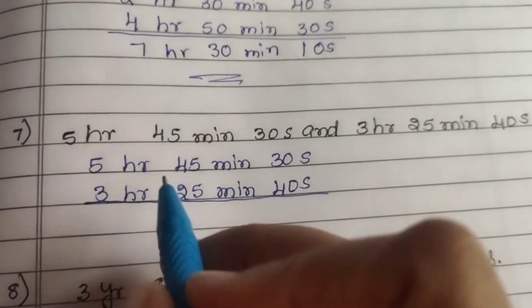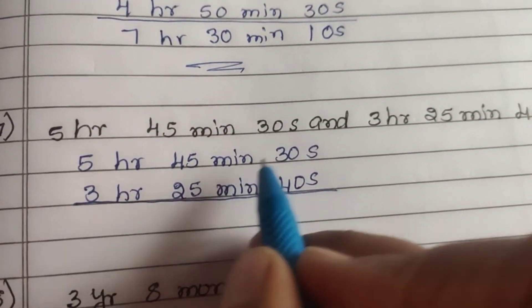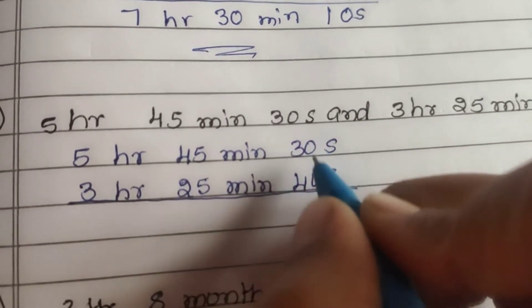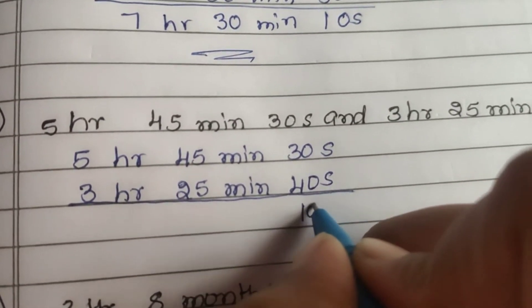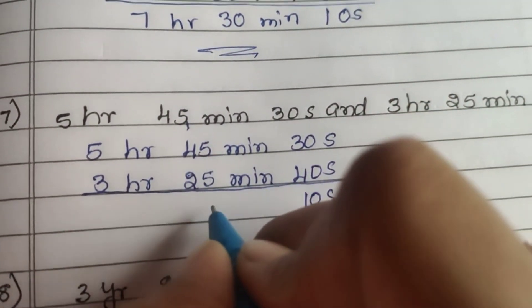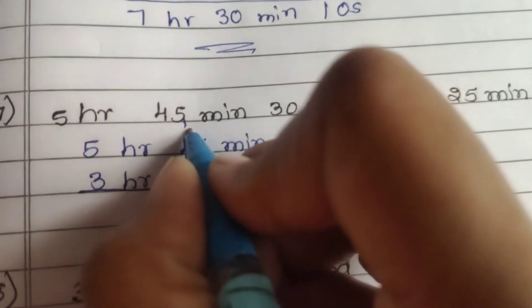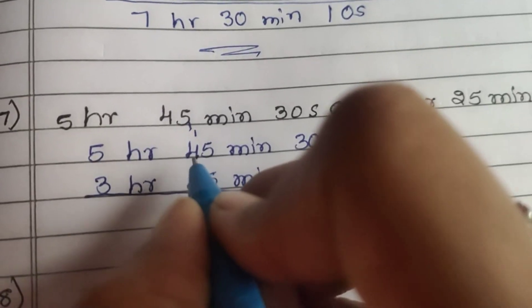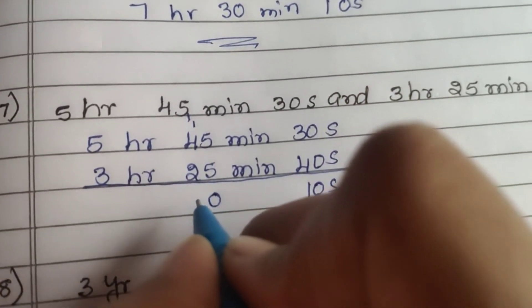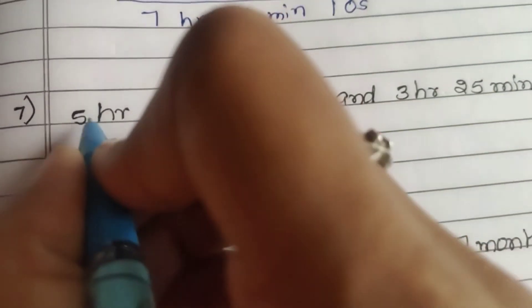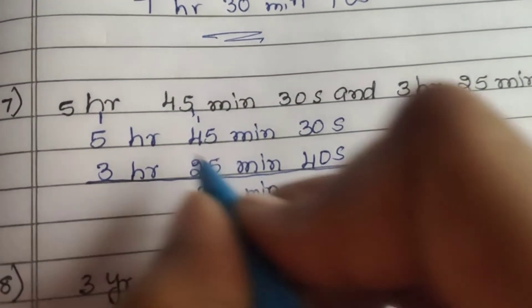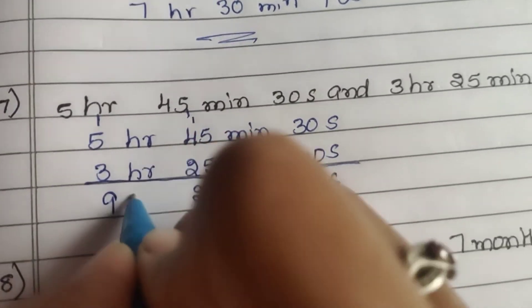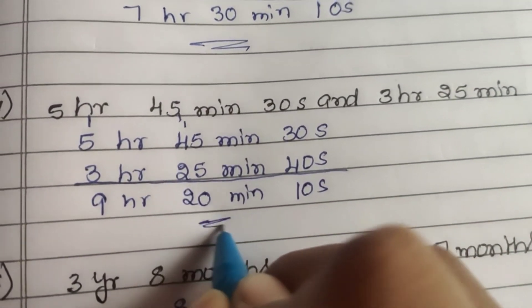7th question: 5 hours 45 minutes 30 seconds and 3 hours 25 minutes 40 seconds. 30 plus 40 is 70 — write 10, carry 1. 5 plus 5 is 10 — carry 1. 1 plus 1 is 2, 2 plus 4 is 6, 6 plus 2 is 8 — carry gives 9. The answer is 9 hours 20 minutes 10 seconds.